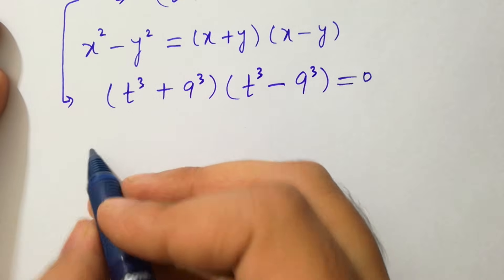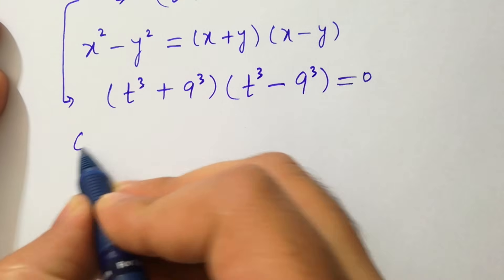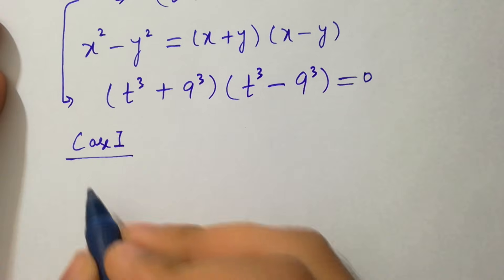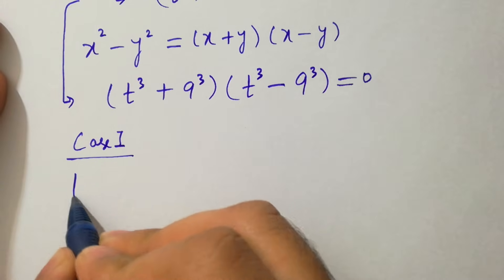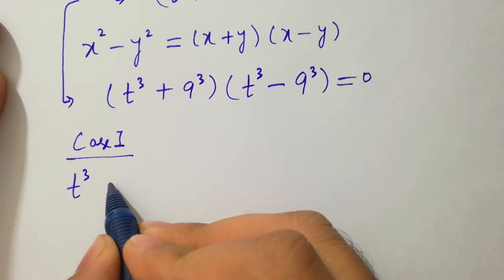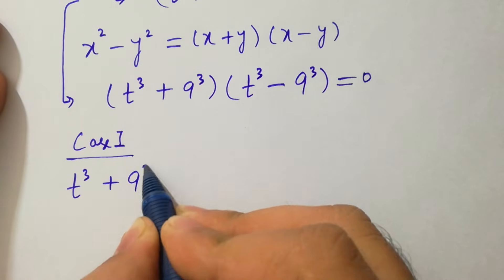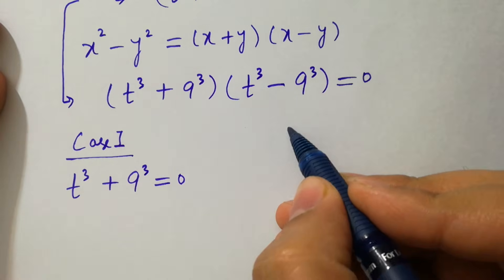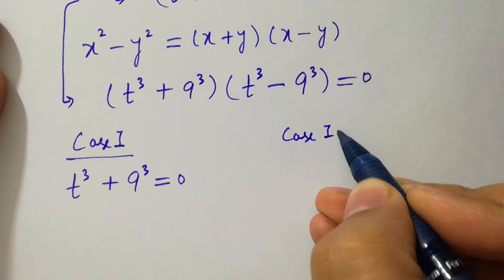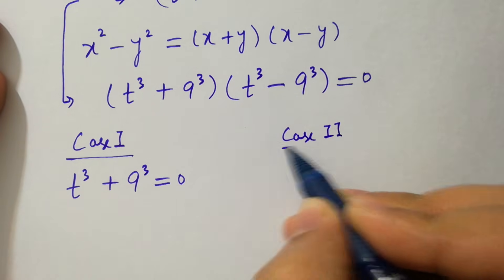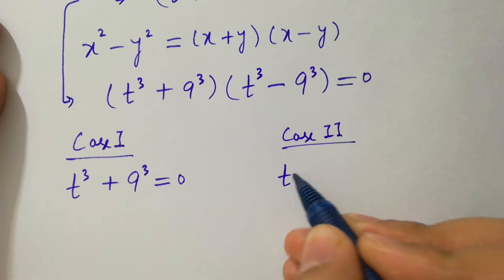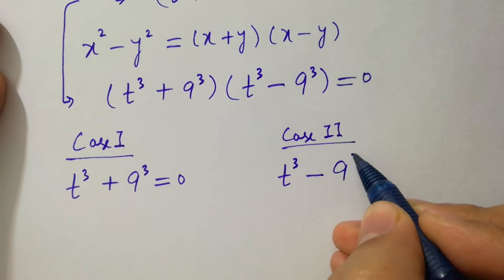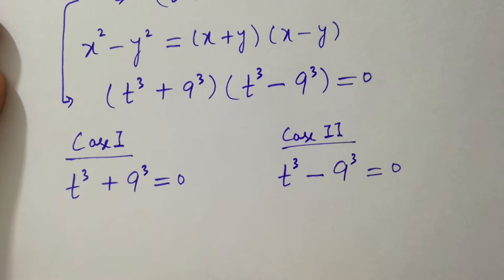We have two cases here. Case 1: t³ + 9³ = 0. Case 2: t³ − 9³ = 0.